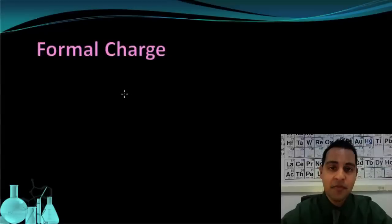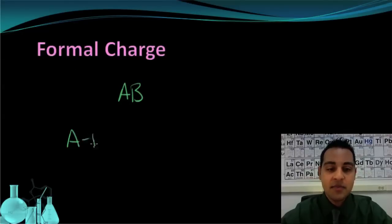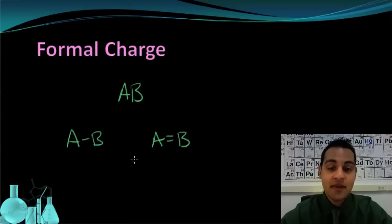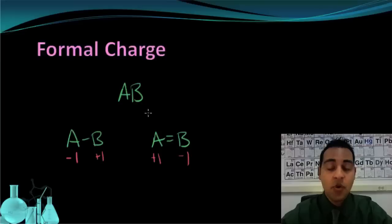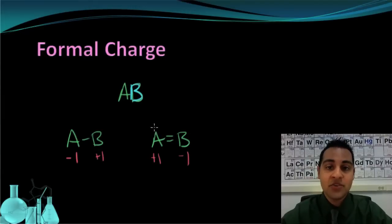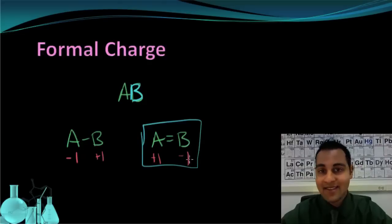Here's a quick rule of thumb on assigning formal charges. If you end up with two Lewis structures that both have the lowest possible formal charges — for example, in one structure A is minus 1 and B is plus 1, and in the other A is plus 1 and B is minus 1 — how do you know which to pick? In that case, make sure the more electronegative element has the negative formal charge. So if B is the more electronegative element, then the structure where B is minus 1 would be the correct Lewis structure.